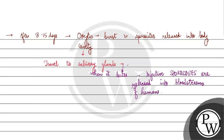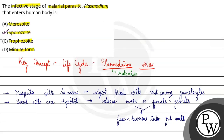This is the infective stage of Plasmodium that will be the sporozoid. So here option B will be the correct answer. I hope you guys understood it well. Best of luck.